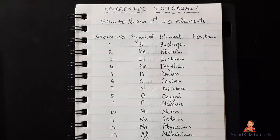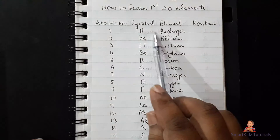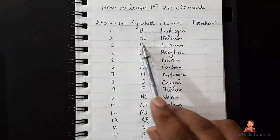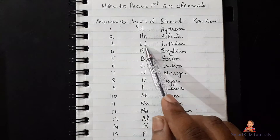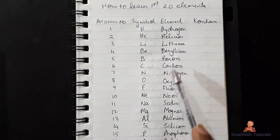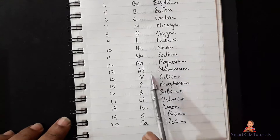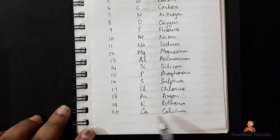These elements are useful in so many cases, especially for science students, and even in class 10th we need to know the first 20 elements. The first element is hydrogen (symbol H), second is helium (symbol He), followed by lithium, beryllium, boron, carbon, nitrogen, oxygen, fluorine, neon, sodium, magnesium, aluminium, silicon, phosphorus, sulfur, chlorine, argon, potassium, and calcium.